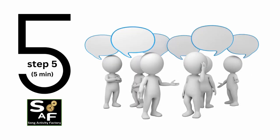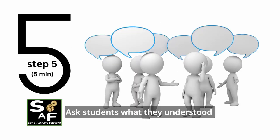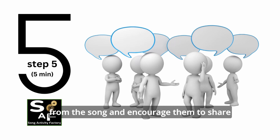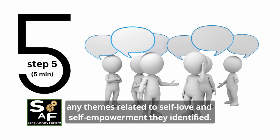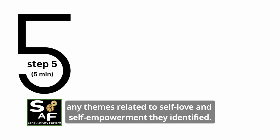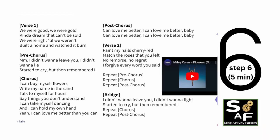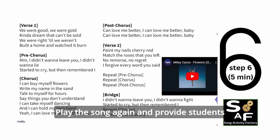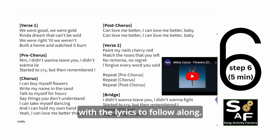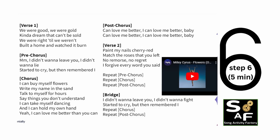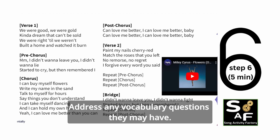Step five — five minutes. Ask students what they understood from the song and encourage them to share any themes related to self-love and self-empowerment they identified. Step six — five minutes. Play the song again and provide students with the lyrics to follow along. Address any vocabulary questions they may have.